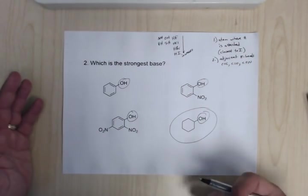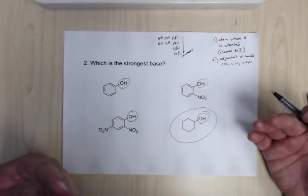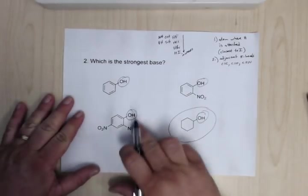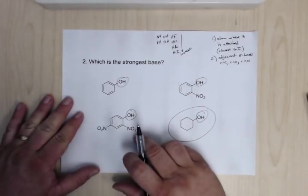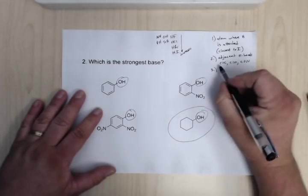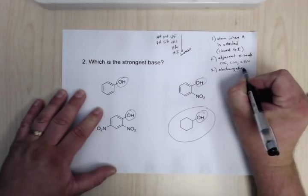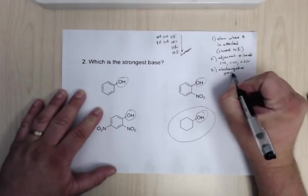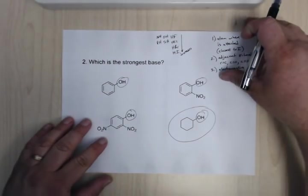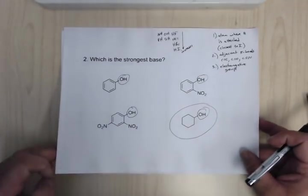Now if we were going to ask which one is the weakest base, we would say you could conversely say that it's the most acidic. For that one, it would be this one because you have two electronegative groups on it. So if there's still a tie in this one, you would look for electronegative groups. So again, you can use this acidity, you could tie that in the strength of the acid compared to the strength of the base in the inverse relationship.